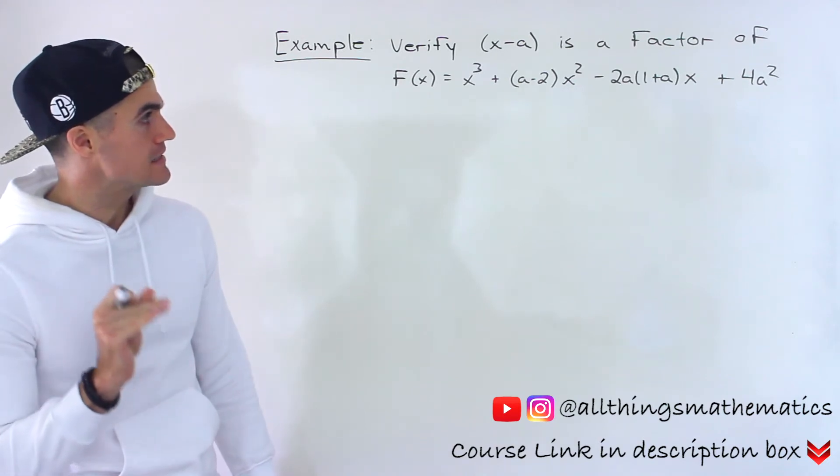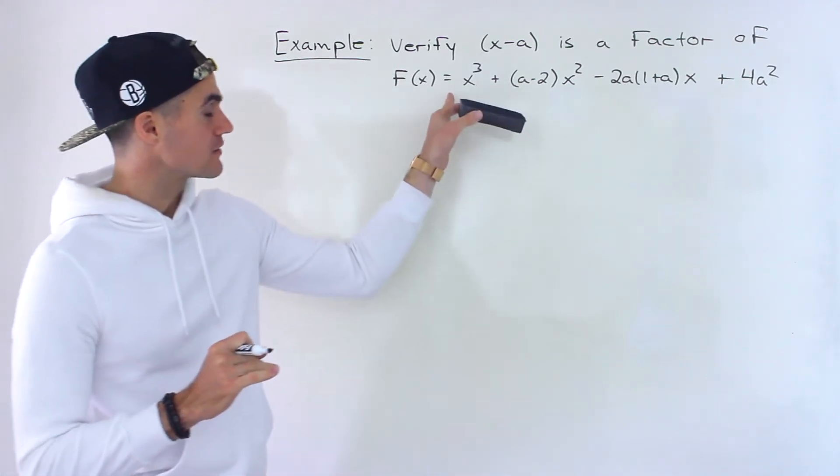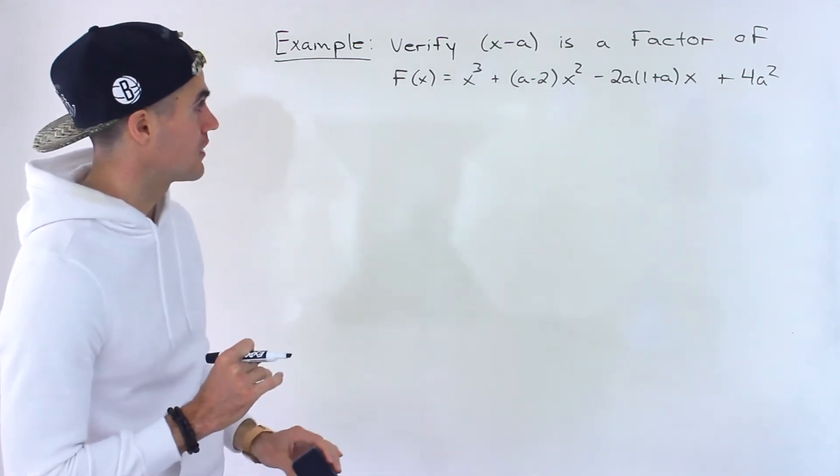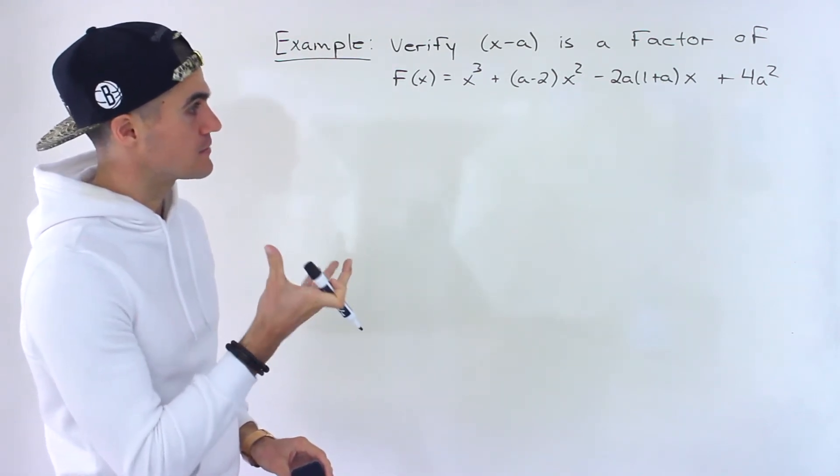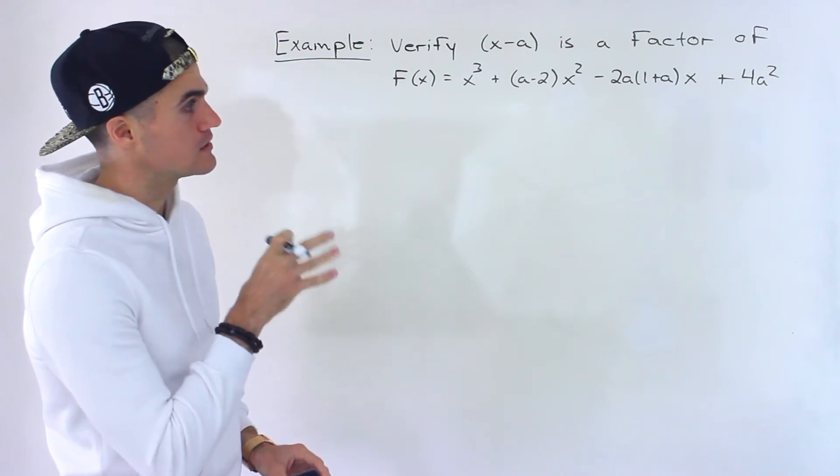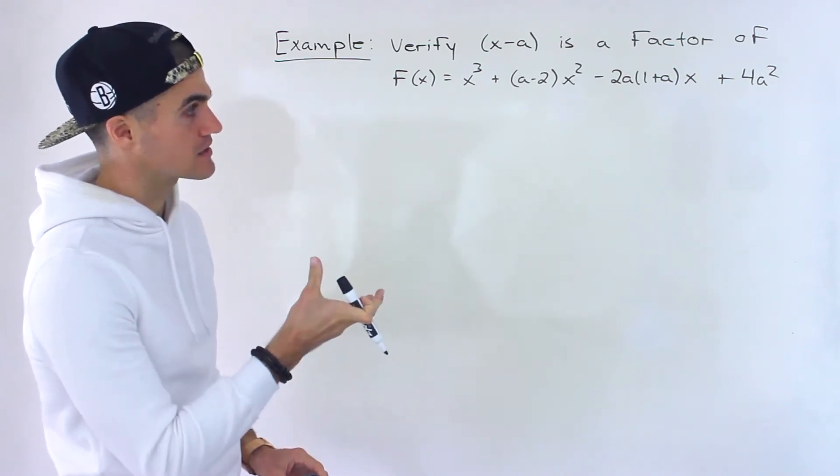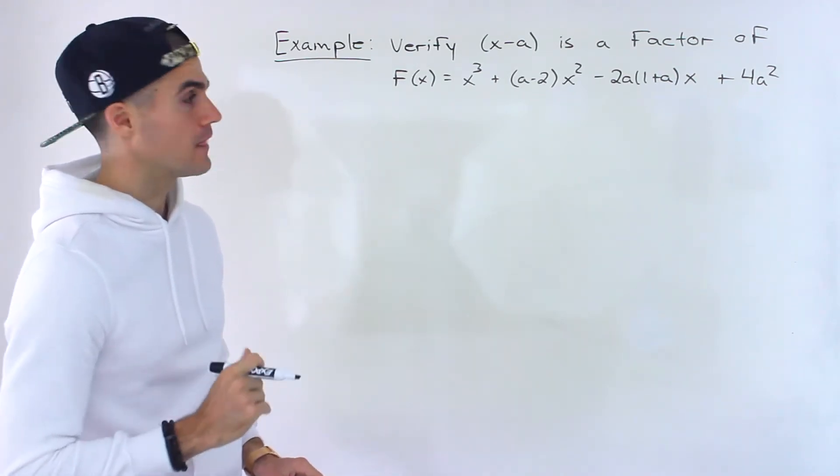So we have to verify that x minus a is a factor for this function here. f of x equals x to the power of three plus a minus two times x squared minus two a times one plus a times x plus four a squared.